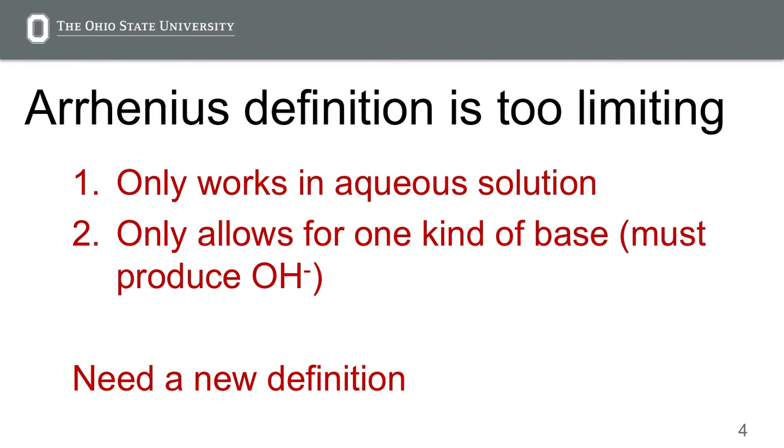So again, like I said, the Arrhenius' definition for acids and bases is too limiting, only works in aqueous solution. And for bases, it only allows for one kind of base, which means it must produce OH-. So there are other bases, for instance, and so we need a new definition.